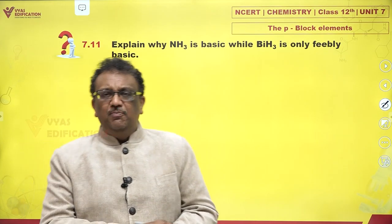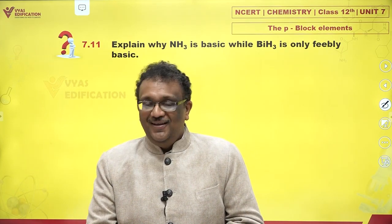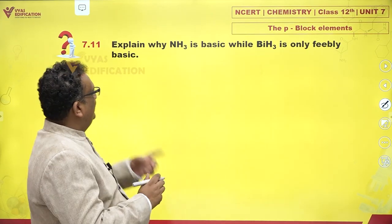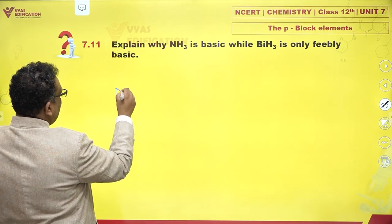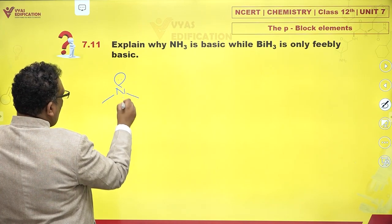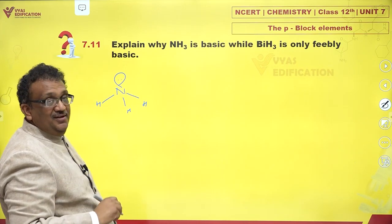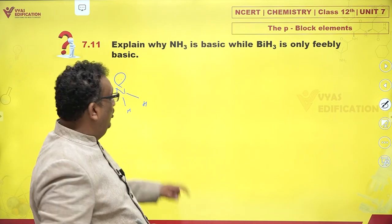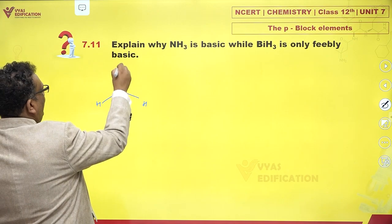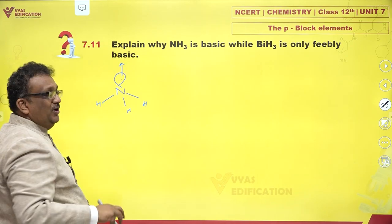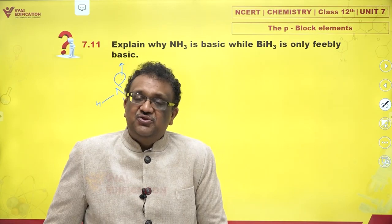Explain why ammonia is basic, but bismuthine is only feebly basic. There are two very beautiful reasons. First of all, please appreciate what basic strength is: the tendency to donate the lone pair of electrons to another party which is electron deficient, forming a covalent bond or a coordinate covalent bond. That is called basic strength.